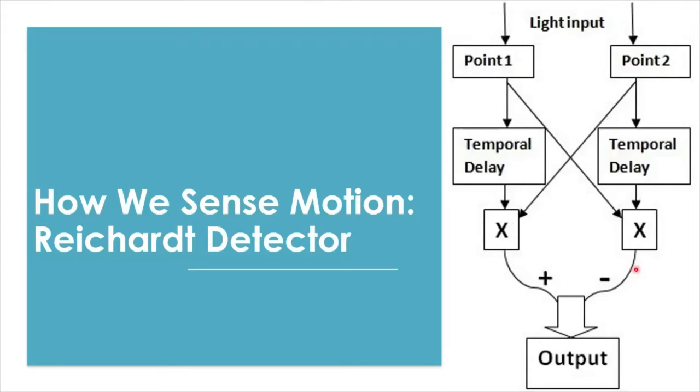According to this model, motion and its direction can be signaled when two spatially separated inputs from adjacent retinal locations are initiated at slightly different times. When the original signal from one point in space coincides with the delayed signal from an adjacent point in space will signal the motion and its respective direction.